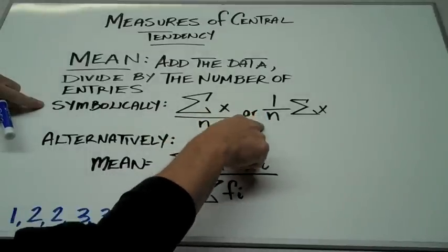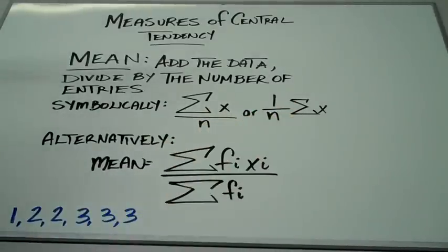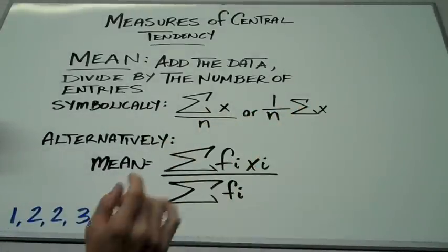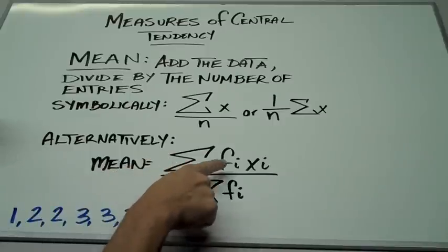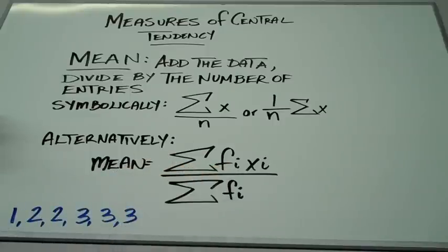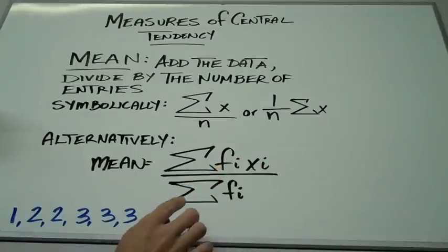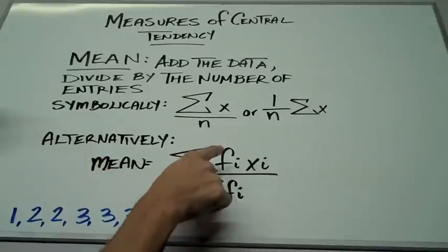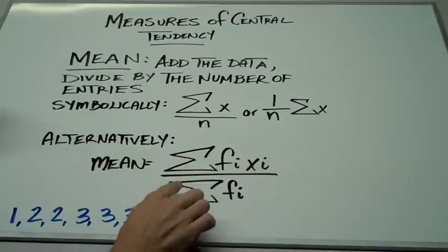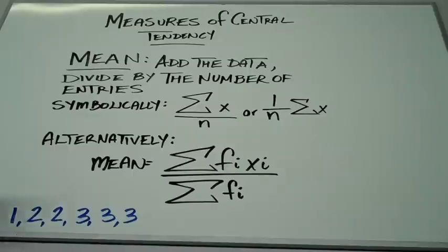Alternatively, you could think of it as 1 over n times the sum — this big sigma symbol means the sum of all of our entries. Or you could think of it as the sum of the frequency of each entry times the value of each entry, divided by the sum of the frequencies. That's all it means: the sum of frequency times the entry, divided by the sum of the frequencies.